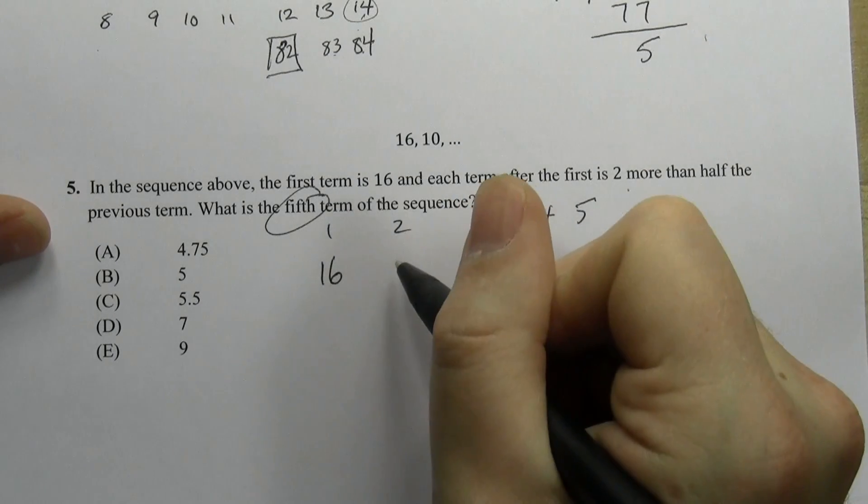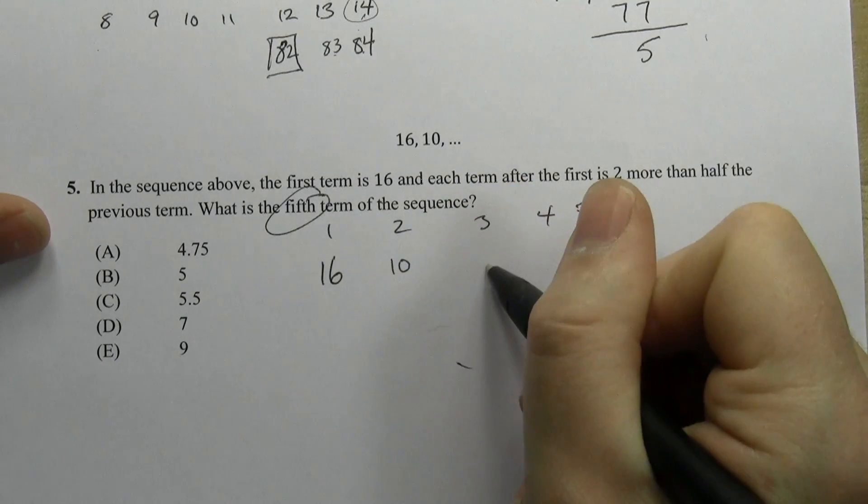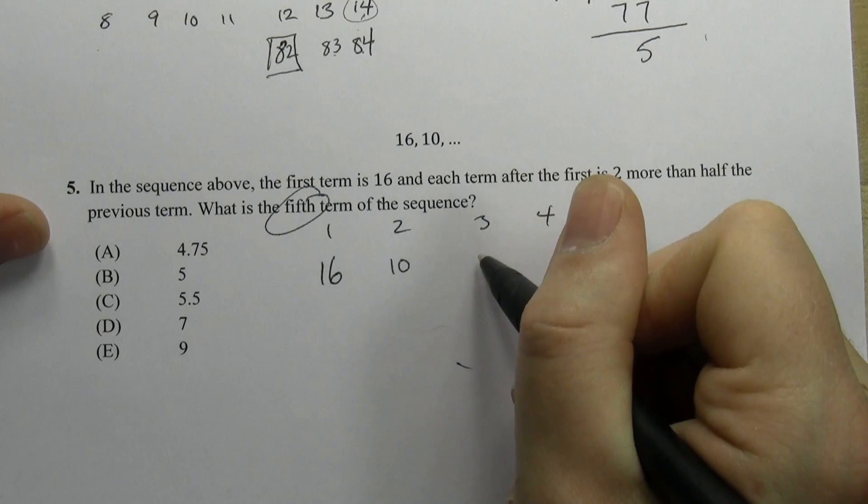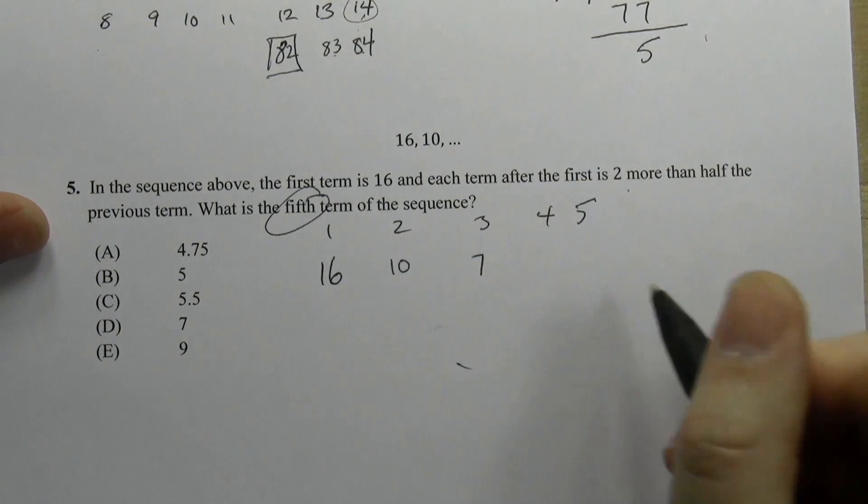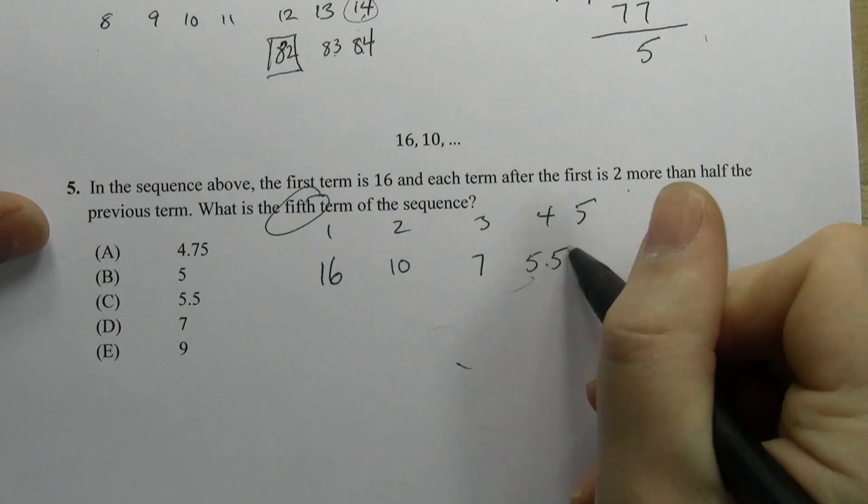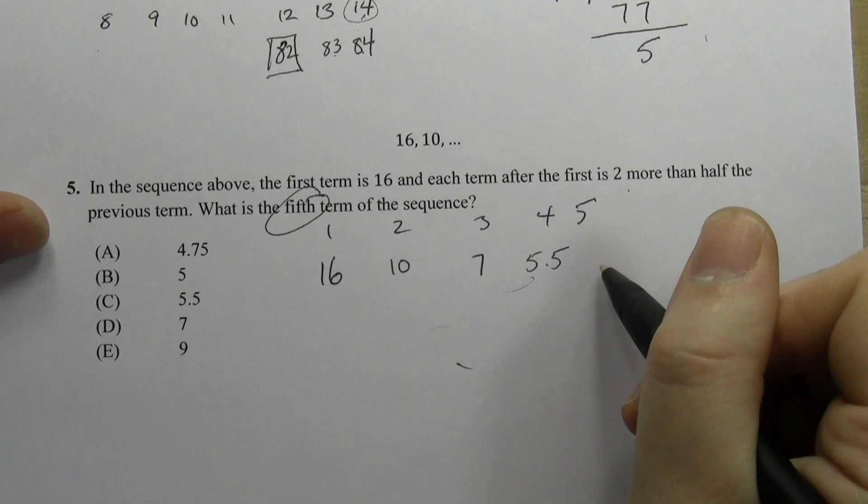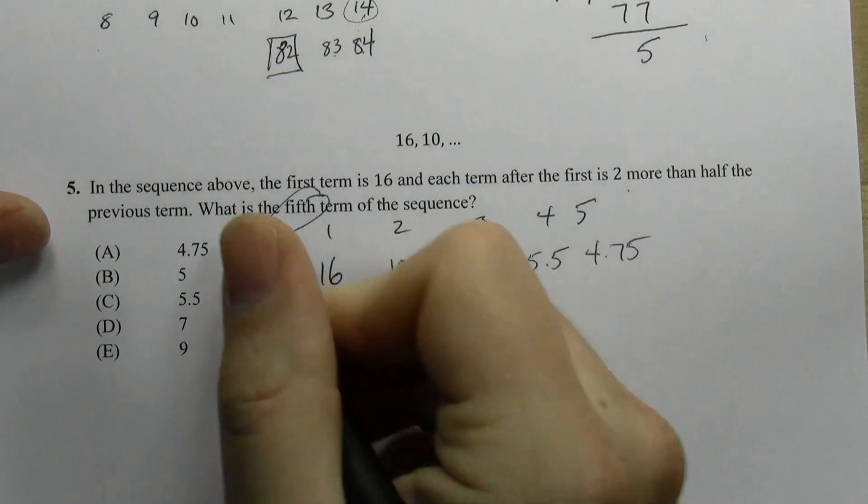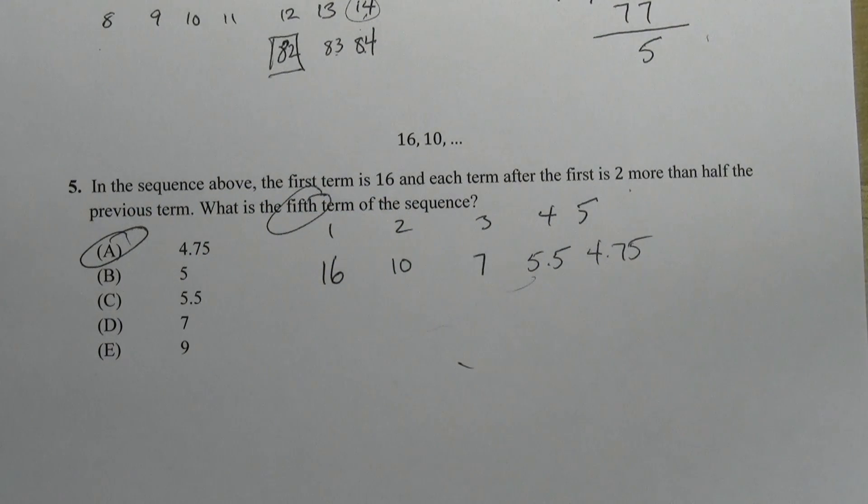So you have 16 is the first term, second, third, fourth, we need to find the fifth term. So 16 divided by 2 is 8, plus 2 is 10. 10 divided by 2 plus 2 is 7. 7 divided by 2 is 3.5, plus 2 is 5.5. 5.5 divided by 2 is 2.75, plus 2 is 4.75. Piece of cake, right?